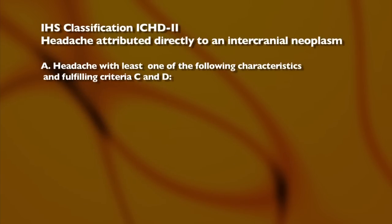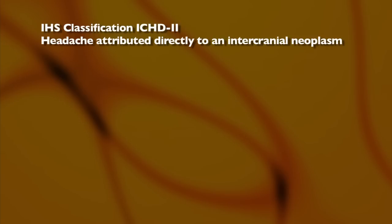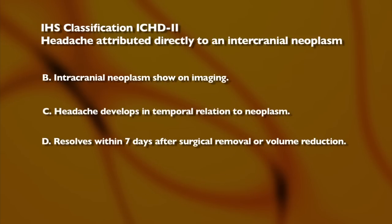The first type are headaches caused directly by the tumour itself. These can be localised to begin with but tend to become progressively more severe as the tumour develops. They are sometimes described as being worse in the morning, and maybe worse on bending, coughing, and straining. Importantly, these headaches tend to get better once the tumour is operated on and removed, or at least reduced in size.